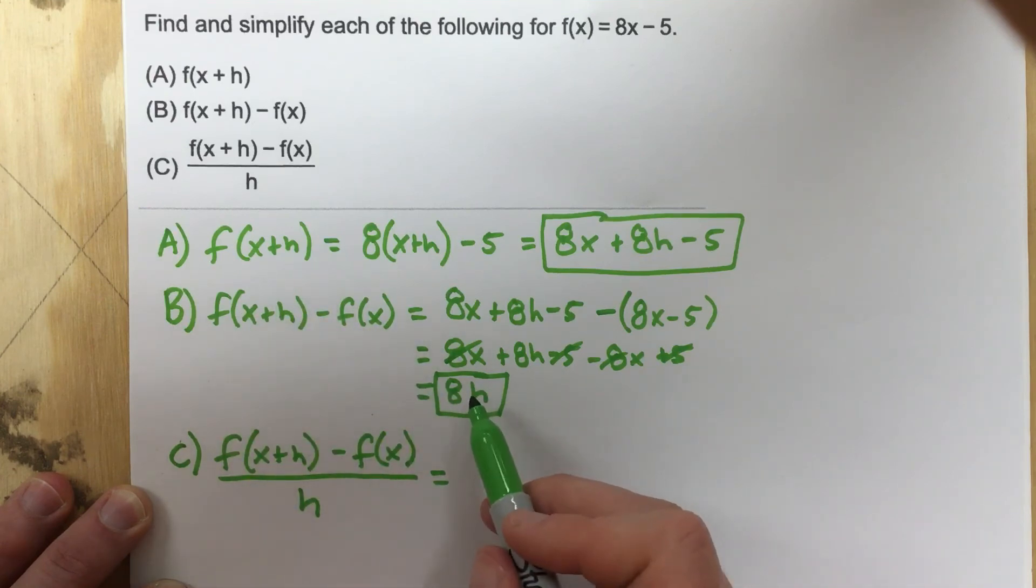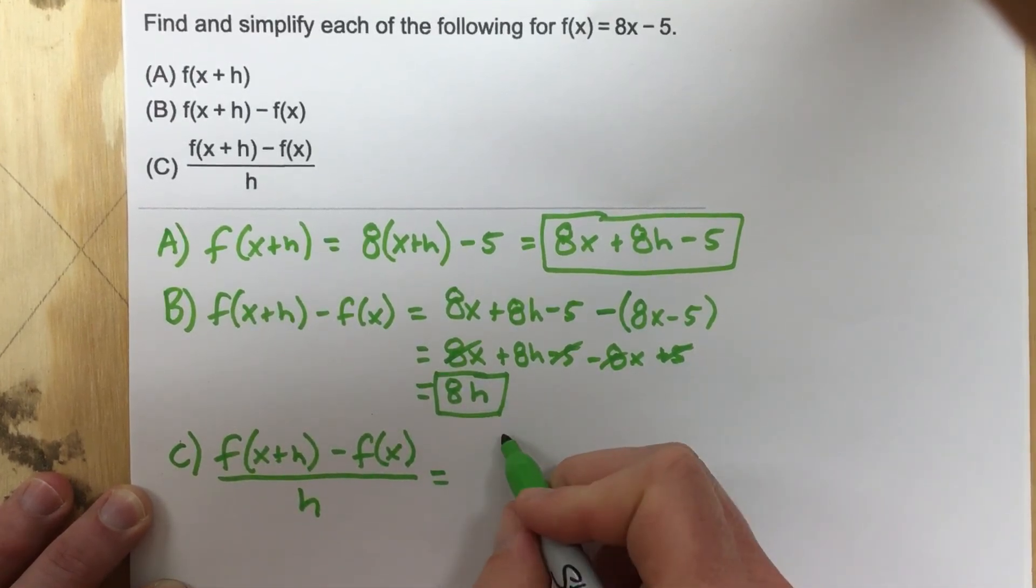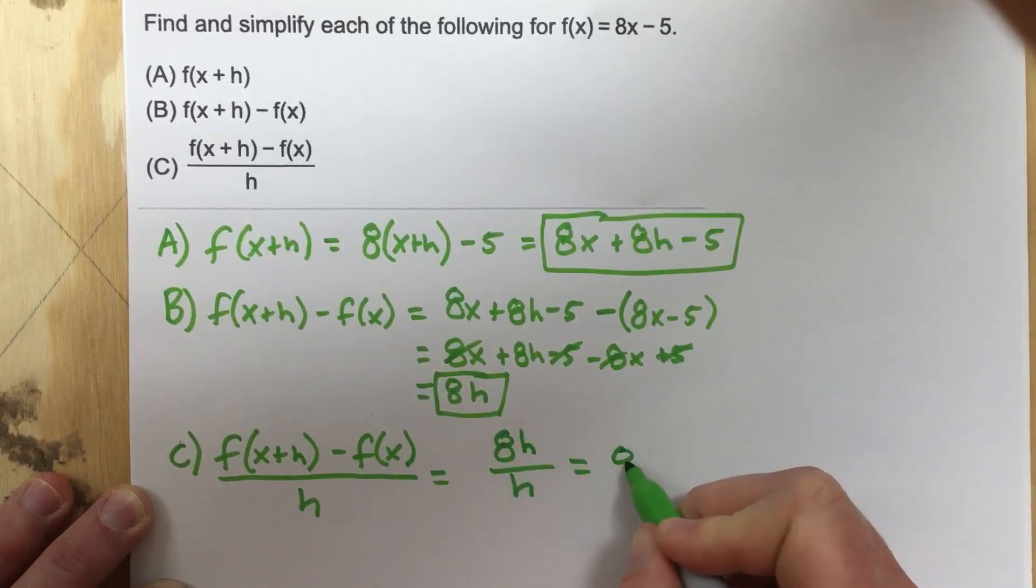right here, and we got 8h. So this is really just 8h over h. And you can see that the h's cancel, leaving us with just 8.